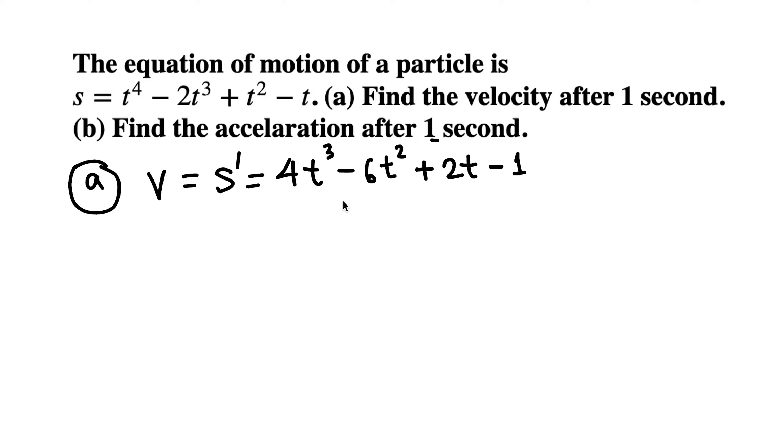We found the velocity at any time t, but the question wants us after one second. So v after one second, simply plug in 1: 4 times 1 cubed is 4, minus 6 times 1 squared is 6, plus 2 times 1 is 2, minus 1. Four plus 2 is 6, minus 6 is 0, so we get negative 1.